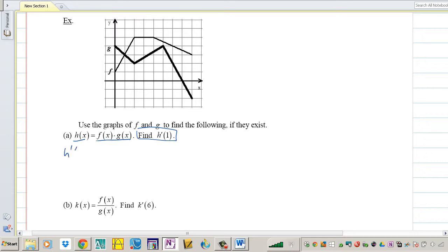Let's find H prime. H prime is the first function times the derivative of the second function, plus the second function times the derivative of the first function. They want us to find it at 1, so F of 1 times G prime of 1 plus G of 1 times F prime of 1.